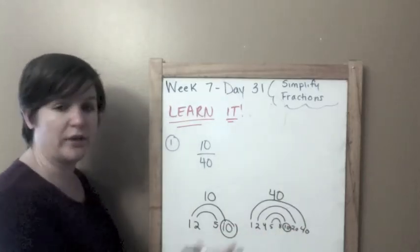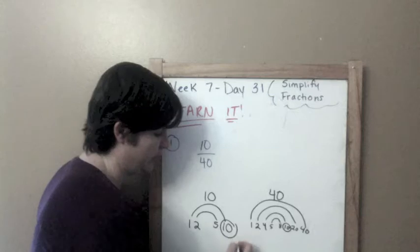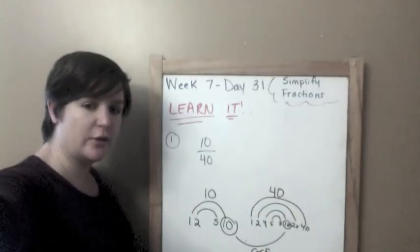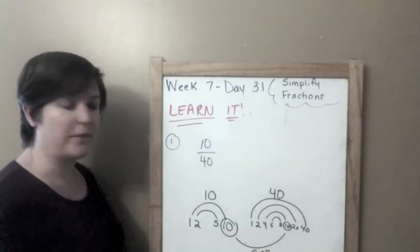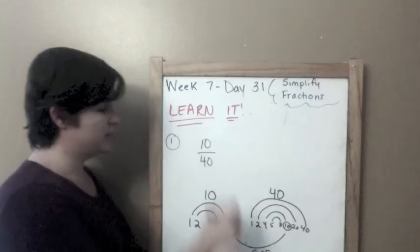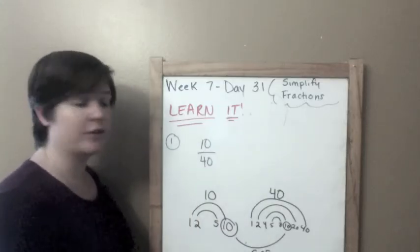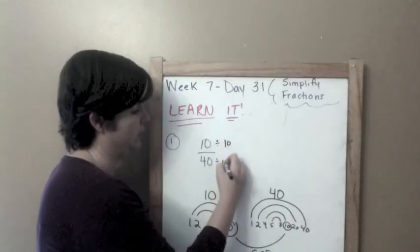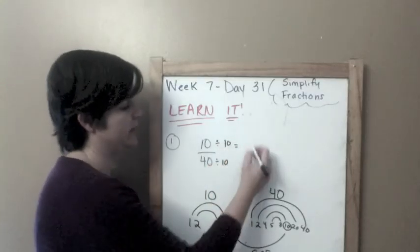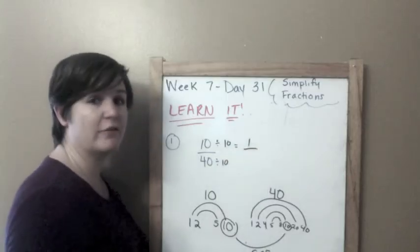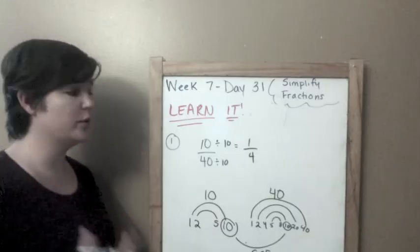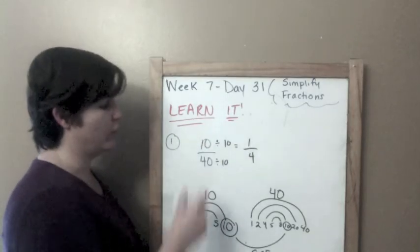So now we have our GCF, our greatest common factor. Now what we're going to do is divide these two fractions by the greatest common factor. Divide 10 by 10, and divide 40 by 10. 10 divided by 10 is 1, and 40 divided by 10 is 4. To reduce this to our simplest or lowest terms, we have 1/4.